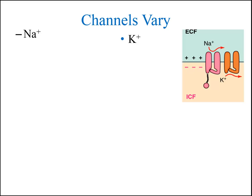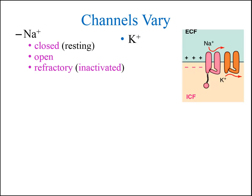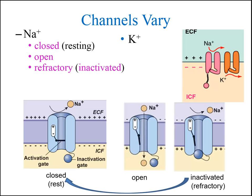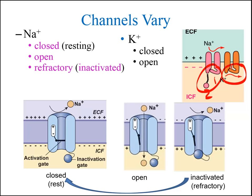For example, recall that the voltage-gated sodium channel involved in the action potential has all three states, while the voltage-gated potassium channel only has two states. This is also reflected in the fact that the voltage-gated sodium channel has two gates, while the voltage-gated potassium channel only has one gate.